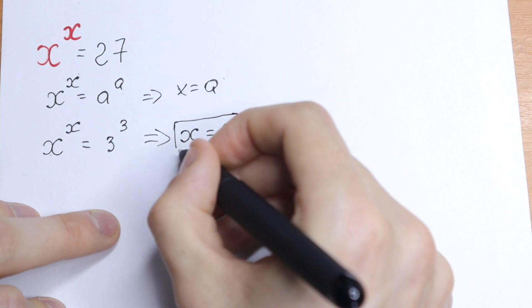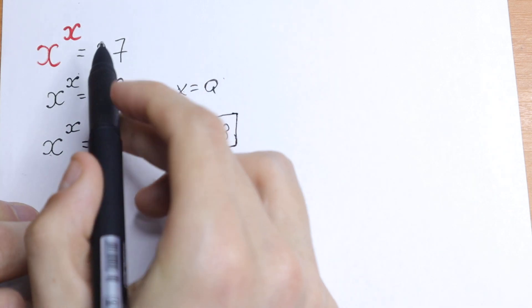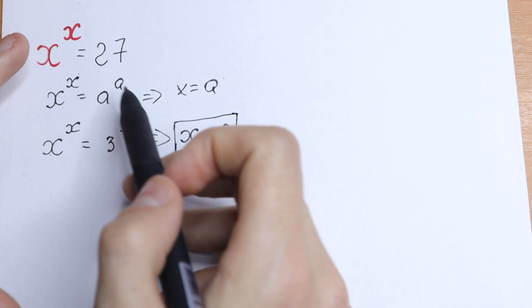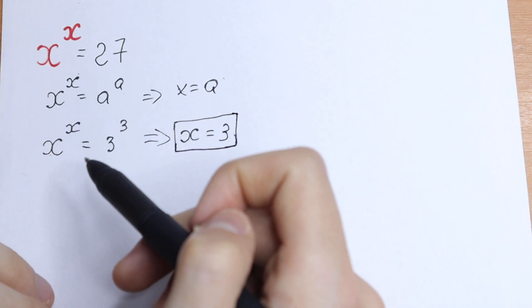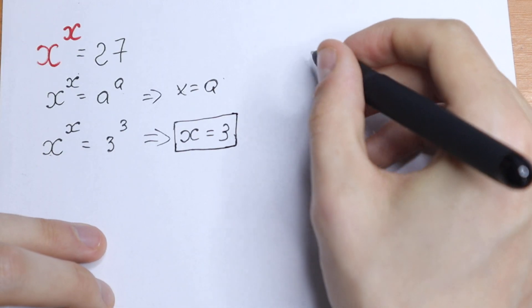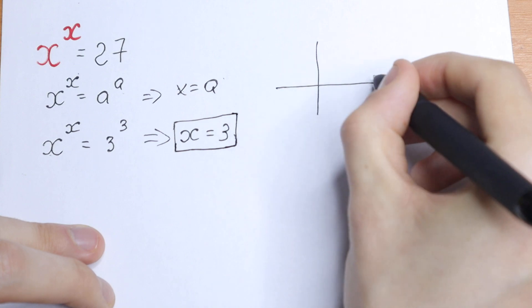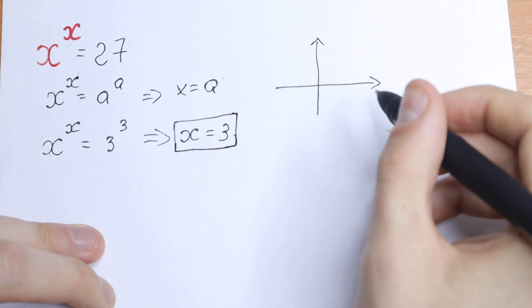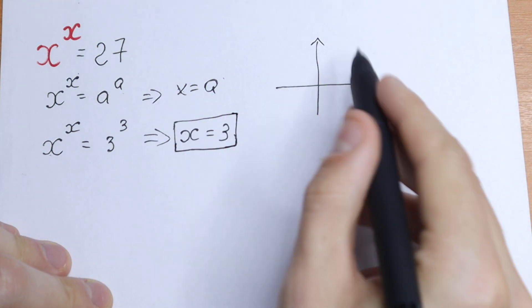Of course this is not a general method to solve it, because if we have, for example, 30, there's no way to solve it like that. But we can easily prove that this will be the one and only solution, because x to the power x, if you're talking about graph methods.